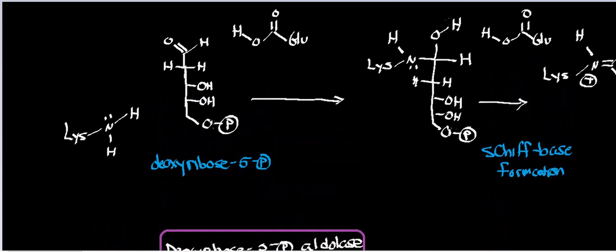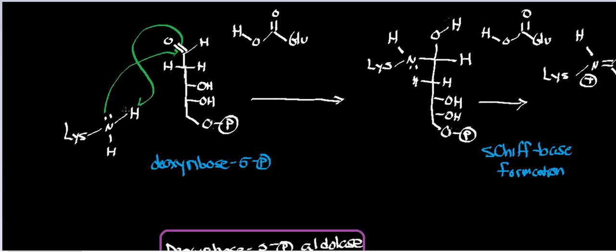We're going to look at the mechanism of this enzyme and then discuss what happens to the products. I'll draw the mechanistic steps in green. The very first step of the mechanism is nucleophilic attack by lysine in the active site and a subsequent proton transfer. Lysine will do a nucleophilic attack on the aldehyde carbon of deoxyribose 5-phosphate, and that's going to induce proton transfer with lysine.